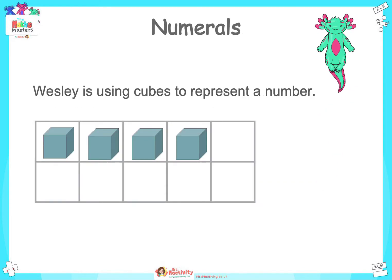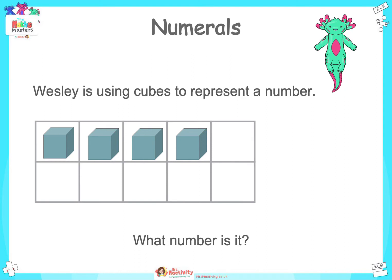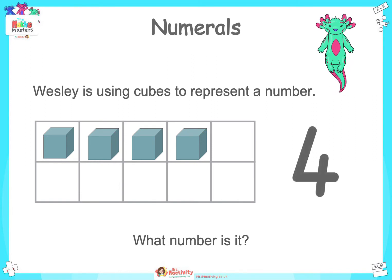Wesley is using cubes to represent a number. What number is it? With a talk partner, write down on a whiteboard the number that is represented by the cubes. You can also use a number card. I'll give you a few seconds. Shall we count together? Let's go. 1, 2, 3, 4. Did everyone get it right? Did anyone miss anything out, or did you start counting at zero? You've got to start counting from one. That's right — it's the number four.